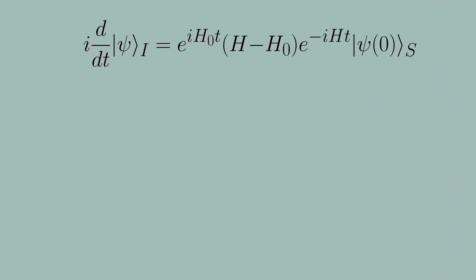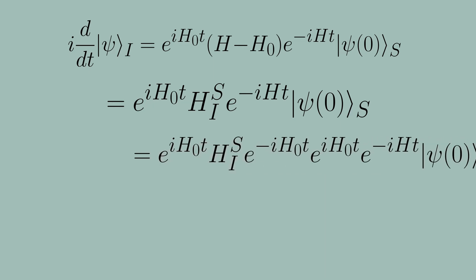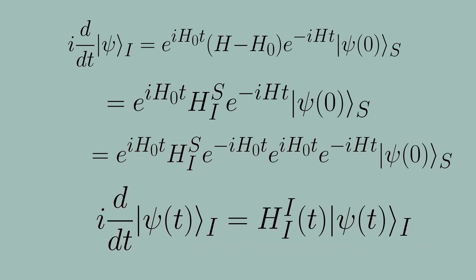So let's take a look back at the definition of the interaction state. Differentiating with respect to time, we arrive at the following equation. The inside, of course, is just the interacting portion of the Hamiltonian. Introducing the time evolution from the free part again, we recover the time evolution equation in terms of our interacting ingredients.